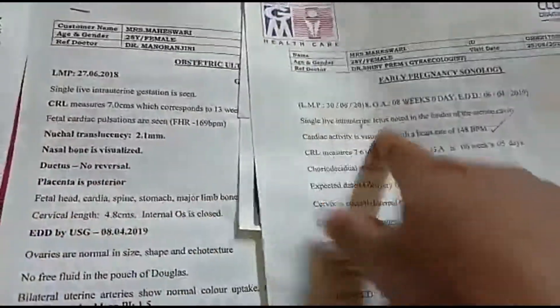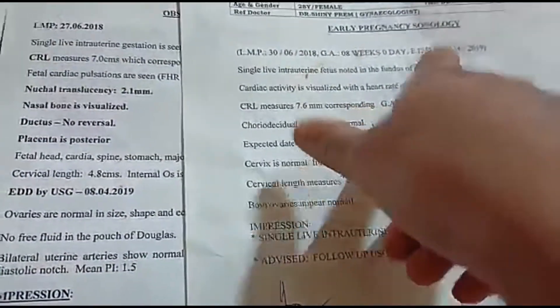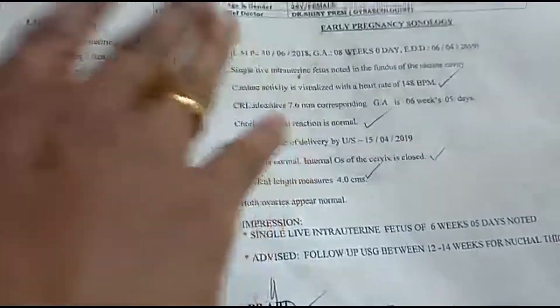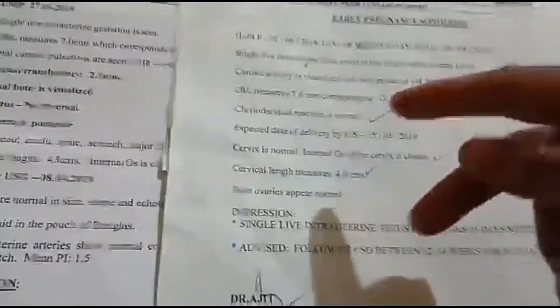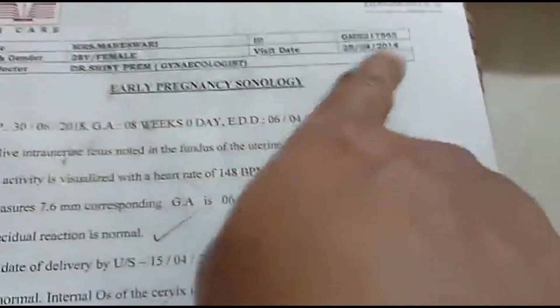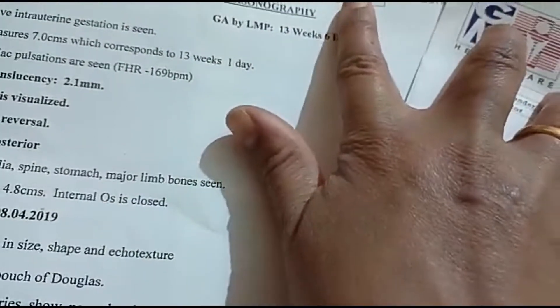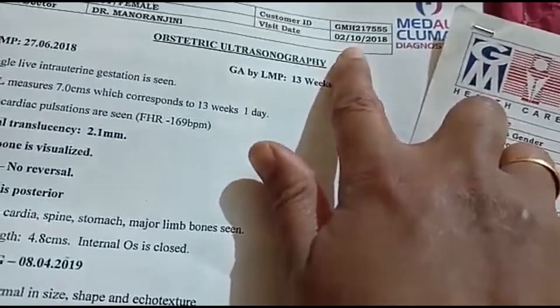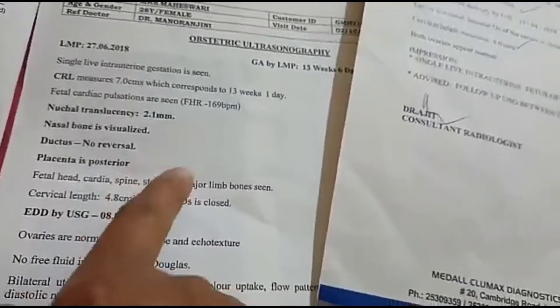This is my computer date for EDD. I will see my period date for April 6th. This is my computer date for EDD. This is my computer data — this is the first third scanning report.